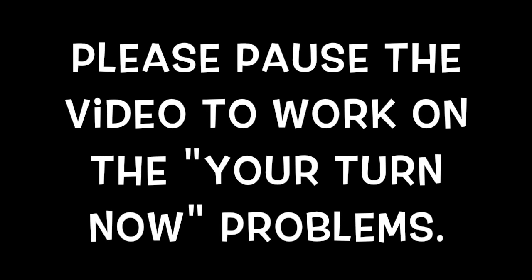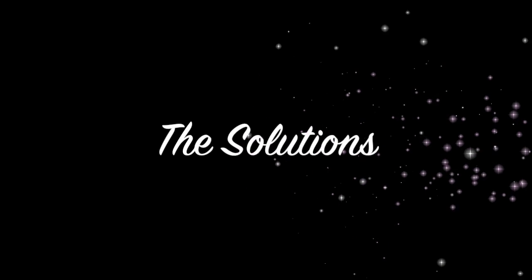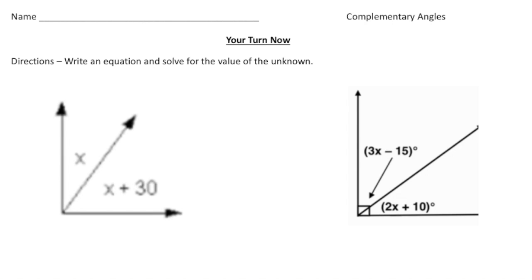Welcome back. Let's see how you did with these complementary angle problems. So here we have x and then x plus 30. And together they add up to 90 degrees. So our equation is going to be x plus x plus 30 equals 90. And then we can simplify the two x's. So 2x plus 30 equals 90.